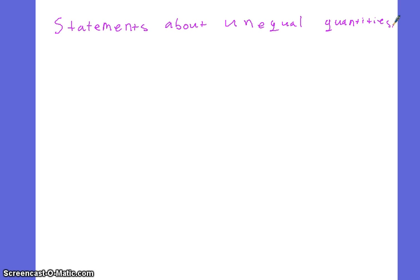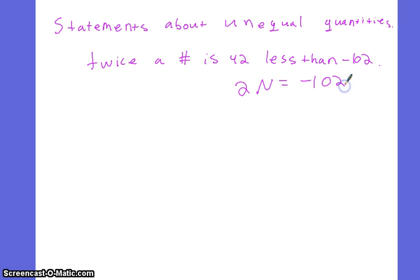To perform this task, we must add as required so that both sides of the equation represent equal quantities. So if we had the equation that looks like this: twice a number is 42 less than negative 102. Find the number.